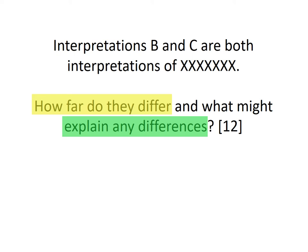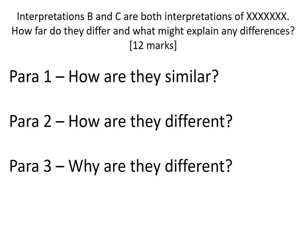That leads us into a really clear structure for this 12-mark question. It should be about one page long — three short paragraphs. Paragraph one: explain how B and C are similar. Paragraph two: explain how B and C are different. Paragraph three: suggest why they might be different. Really simple — similar, different, why.